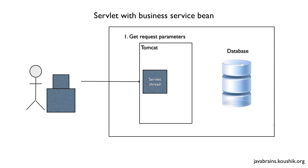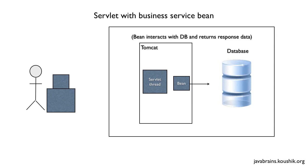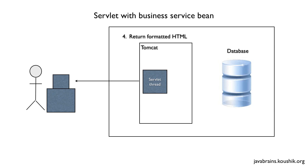In a web application that uses a servlet with business service Java beans, the servlet's first step is to get the request parameters, and then instead of connecting to the database itself, it calls a method of a bean. That bean handles connecting to the database and retrieving results — it publishes some methods. The servlet calls a method of the bean, the bean connects to the database and returns raw response data. The servlet then formats the results to HTML and sends it back. This is an improvement over the servlet doing all the processing itself.